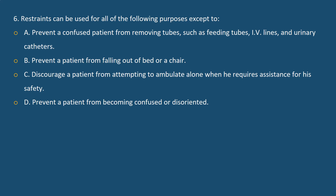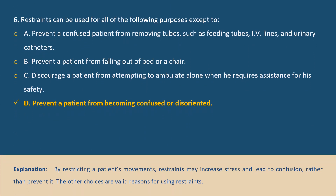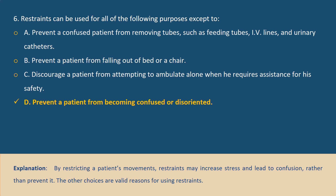Question 6. Restraints can be used for all of the following purposes except to: A. Prevent a confused patient from removing tubes such as feeding tubes, IV lines, and urinary catheters. B. Prevent a patient from falling out of bed or chair. C. Discourage a patient from attempting to ambulate alone when he requires assistance for his safety. D. Prevent a patient from becoming confused or disoriented. Answer D. Explanation: By restricting a patient's movements, restraints may increase stress and lead to confusion, rather than prevent it. The other choices are valid reasons for using restraints.